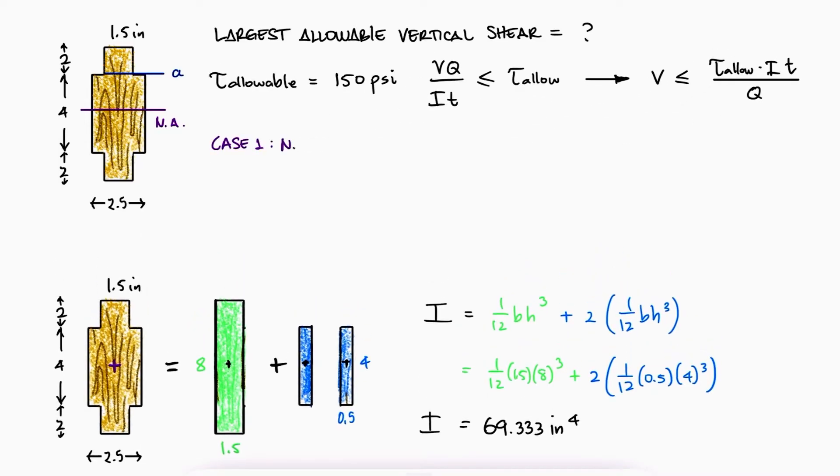For case 1, at the neutral axis, the first moment of area Q would be the shaded area times the distance from the neutral axis to the centroid of each rectangle added together.